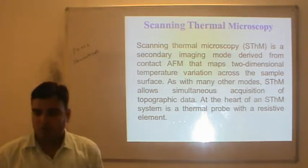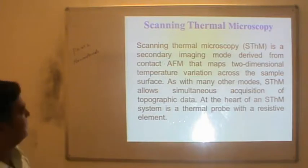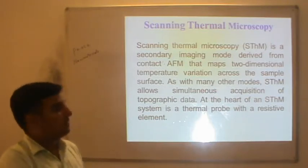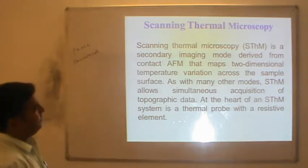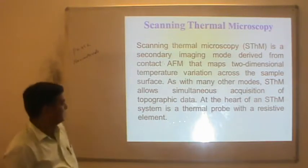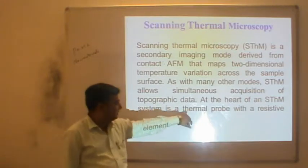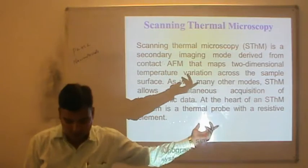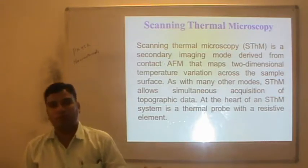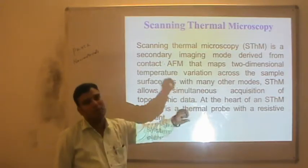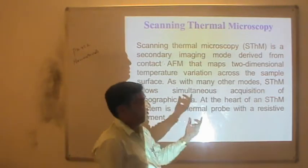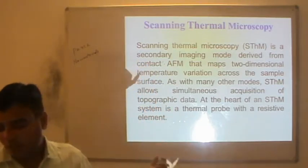SThM is a scanning mode derived from contact AFM that maps two-dimensional temperature variation across the sample surface. It allows simultaneous acquisition of topographic data. At the heart of an SThM system is a thermal probe with a resistive element — in this case we are dealing with a thermal probe made up of platinum, iridium, or any thermocouple material that can sense even very small changes in temperature or heat transfer.